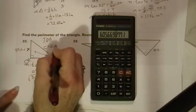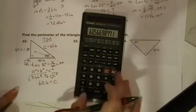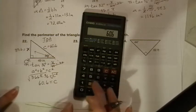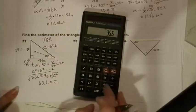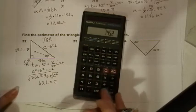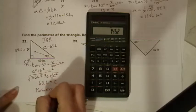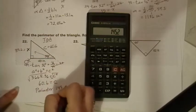And since perimeter is the addition of all the sides, we're going to say 60.6 plus 35.6 plus 49 equals. The perimeter is 145.2.